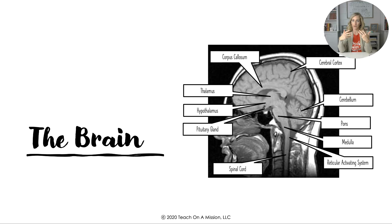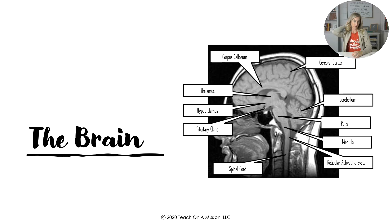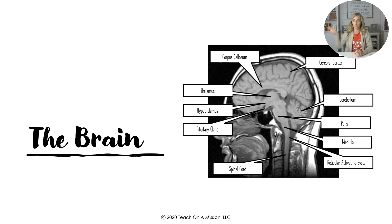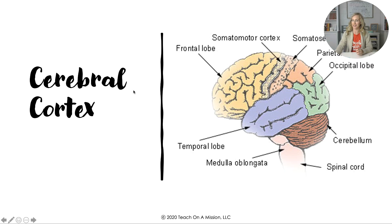Starting at the bottom: the spinal cord is the highway from your body to your brain. The reticular activating system arouses you to be alert when someone calls your name or when you wake up. The medulla controls heartbeat. The pons controls breathing and sleep stages. The cerebellum — the little brain in the back — controls coordination and balance. The thalamus, at the top of the brainstem, is where all sensory information goes to be routed to the various lobes of the cerebral cortex. The hypothalamus controls drives: thirst, hunger, temperature, and sex. The pituitary gland controls the endocrine system. The corpus callosum connects the two hemispheres.